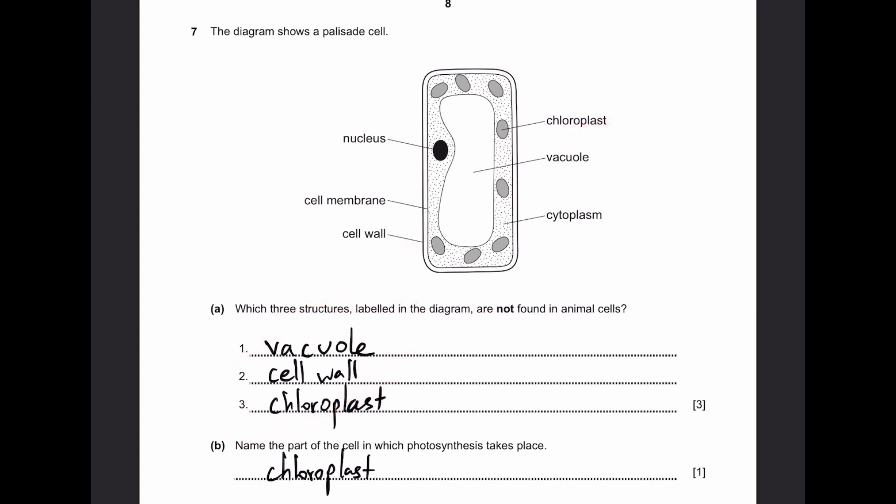Part B. Name the part of the cell in which photosynthesis takes place. Photosynthesis takes place in chloroplasts because it absorbs sunlight.